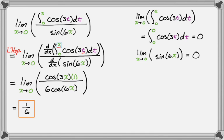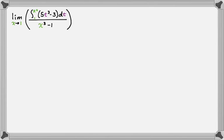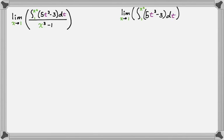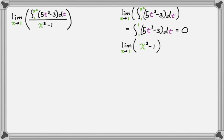Let's do one more. The limit as x approaches 1 of the integral from 1 to x squared of (5t cubed minus 3) dt, all over x cubed minus 1. I'll try direct substitution first — sometimes that works, and these can be almost trick questions because people forget to check. Substituting x = 1, the upper bound becomes 1 squared = 1, so the numerator is the integral from 1 to 1 of (5t cubed minus 3) dt, which is 0. Direct substitution in the denominator also gives 0. So we have 0 over 0 and can definitely use L'Hôpital's rule.